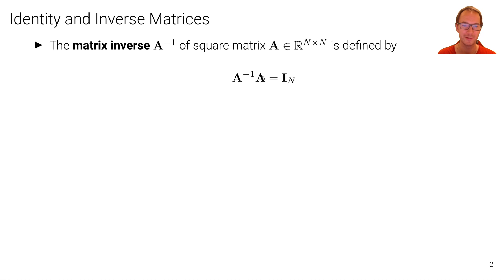In other words, we are canceling the effect of A by multiplying A to the power of minus one, the matrix inverse. So we get the identity as an outcome.